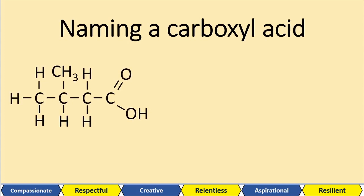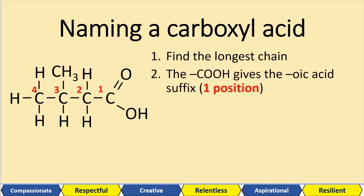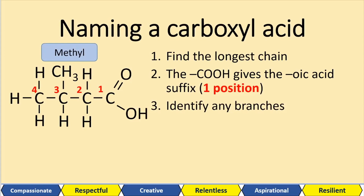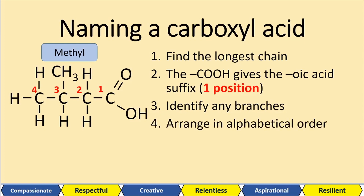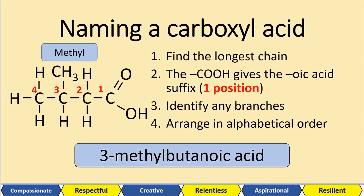When naming carboxylic acids, first find the longest carbon chain. Wherever we have the carboxylic group, that's position one. We use the suffix '-oic acid' and identify any branches on the main chain. We've got a methyl group — four carbons in the longest chain — with a methyl group on a specific carbon. Arranging alphabetically: methyl group on the third carbon, the one position is the carboxylic group, and the longest chain is butane — so adding '-oic', we get 3-methylbutanoic acid.